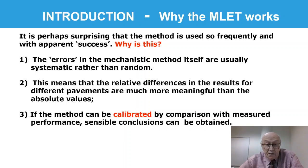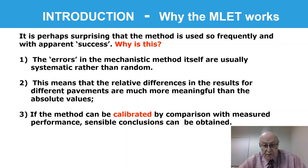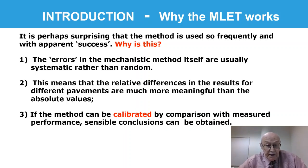So let's answer the question of why this should be so. The point is that the errors, or the differences between the theoretical calculations and measured values, are usually systematic rather than random. In other words, if something looks as if it's twice as strong as something else, then a similar design would also be twice as strong as the theory predicts. So basically, if the errors are systematic, we can deal with it.